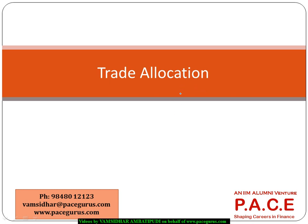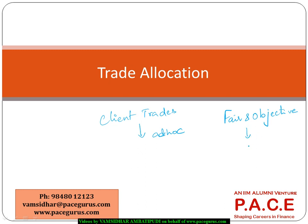Let's look at some of the trade allocation practices that are generally followed. Whatever client trades exist, the allocation of those trades can happen on an ad hoc basis. Even when allocation happens on an ad hoc basis without a proper, fair, and objective method, that itself will lead to violations — especially with respect to fair dealing with the client under Section 3B of the CFA Institute's Standards of Professional Conduct.